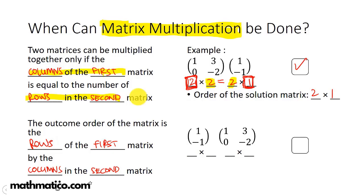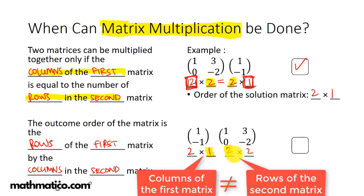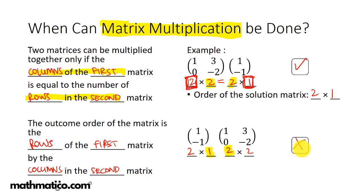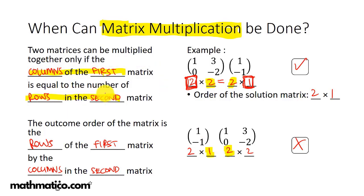Now if we reverse the order — originally 2×2 and 2×1, now we have 2×1 first and 2×2 second — the number of columns of the first is not equal to the number of rows of the second, so matrix multiplication simply cannot be done. If this comes up in a test, you state that matrix multiplication cannot be done because the columns of the first matrix are not equal to the rows of the second.